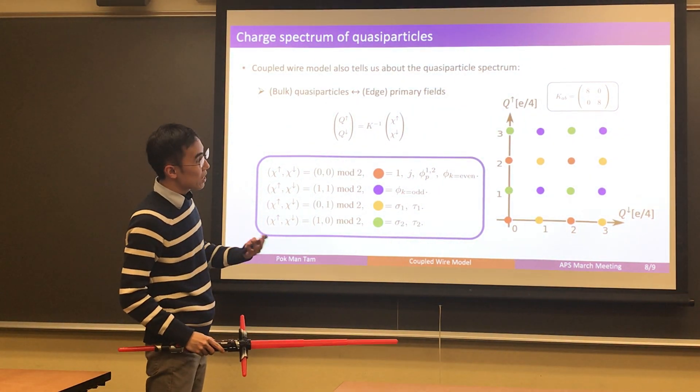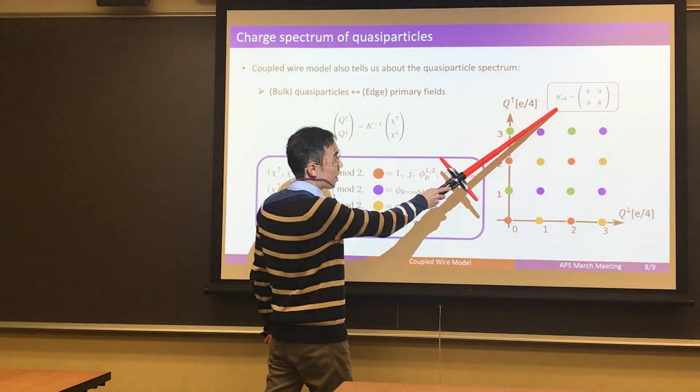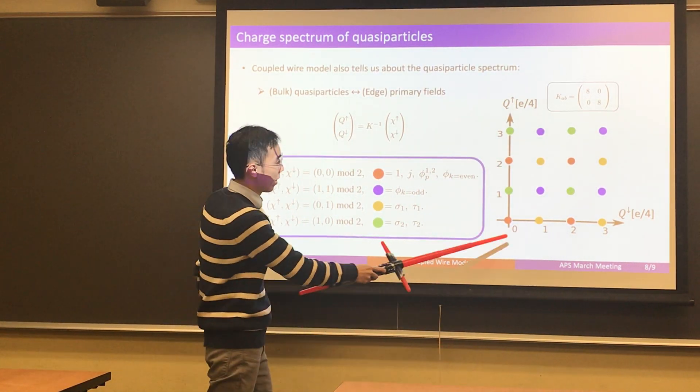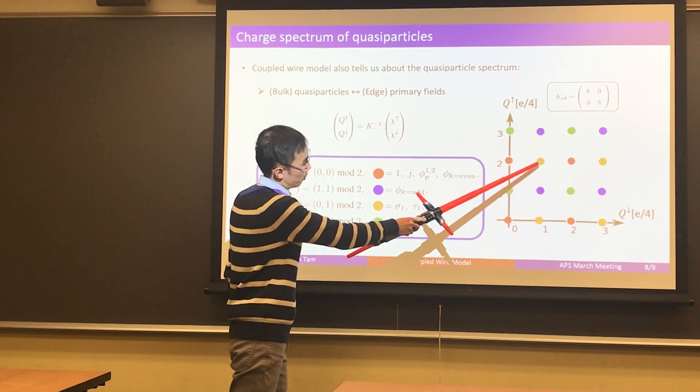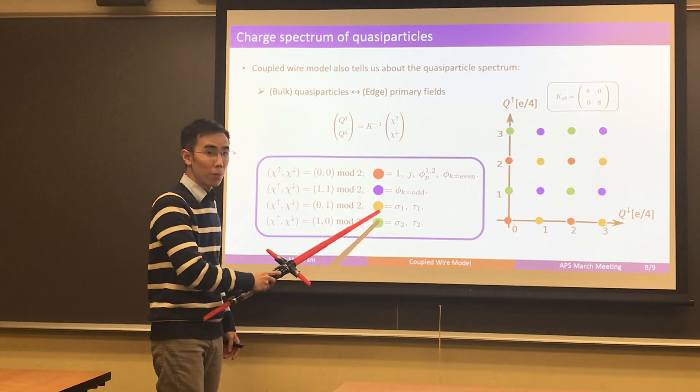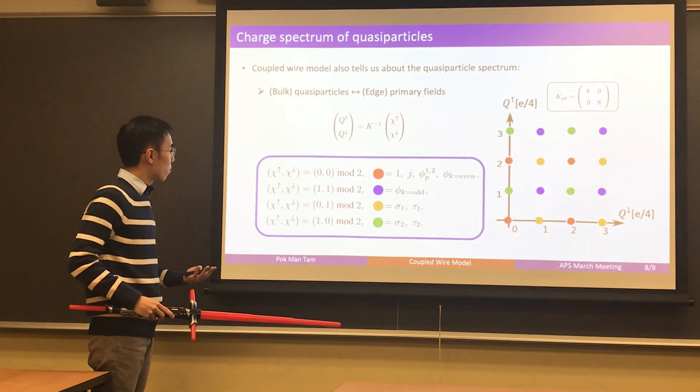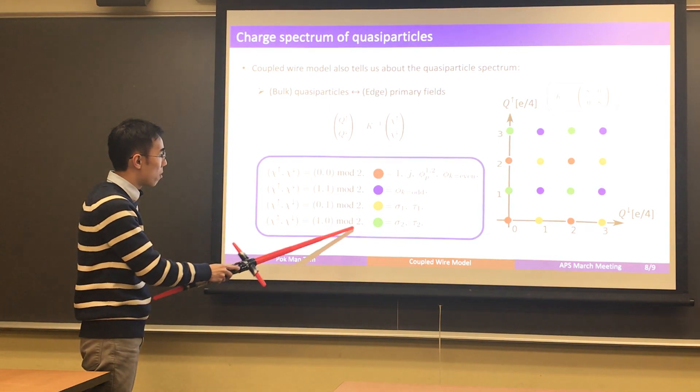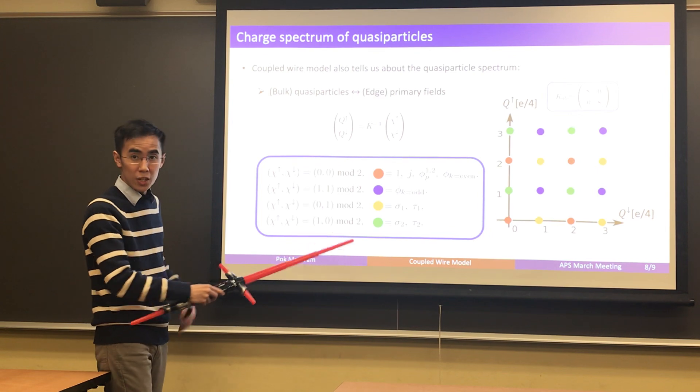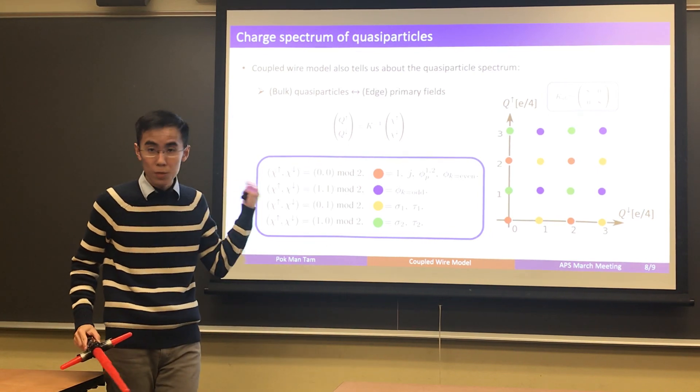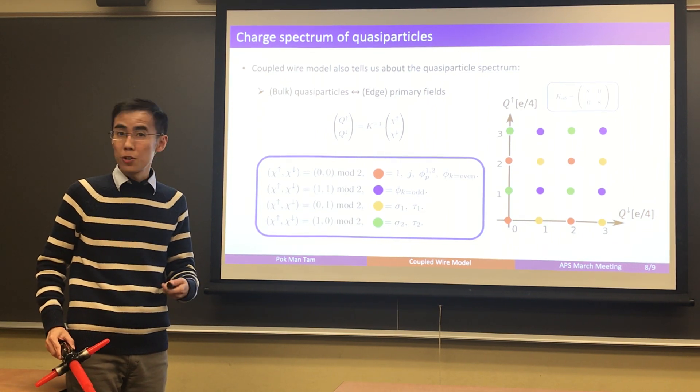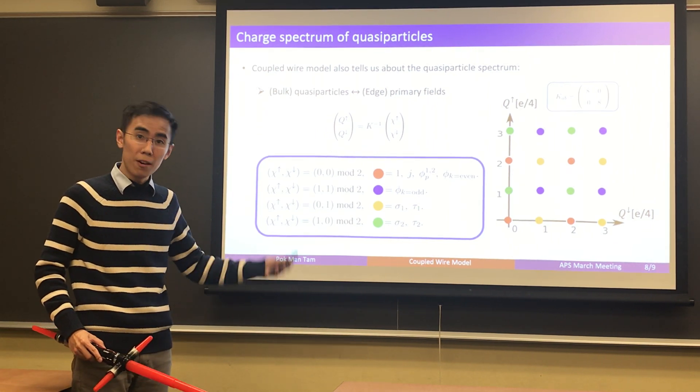In the specific case, in the simplest case, actually, when the K-matrix is this, we can actually nicely summarize this charge spectrum in this simple figure here. The points with different colors correspond to quasiparticles at different topological sectors. I think it's important to emphasize that there's a mod 2 feature, and also a two-component of charge feature, in this classification of quasiparticle charge spectrum, which is actually a reflection of the Z2 cross Z2 fusion structure advertised at the very beginning of this talk.